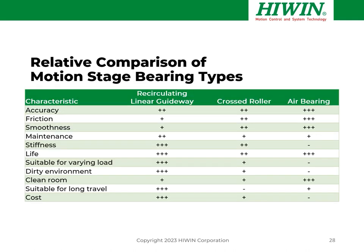Air bearings are another option, but due to cost and complexity, they're only economically viable for the highest-performance systems. Recirculating linear guideways are the most common. Comparing some typical characteristics — accuracy, friction, smoothness, low maintenance, high stiffness, long life — recirculating linear guideways are often a good solution for performance and frequently the lowest-cost solution. Air bearings are excellent for performance but expensive.